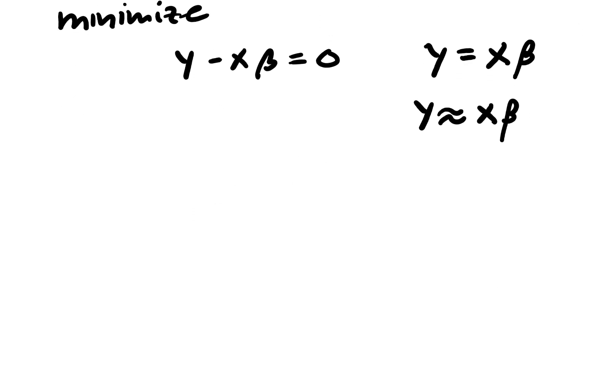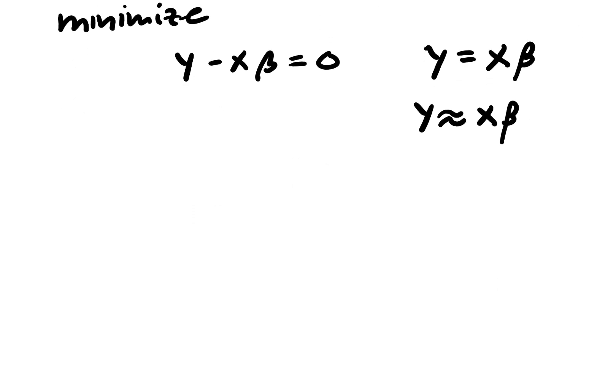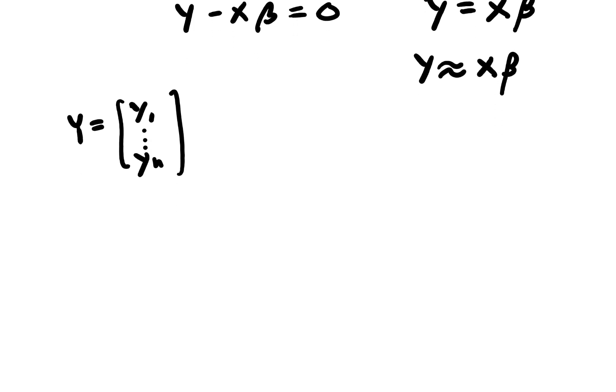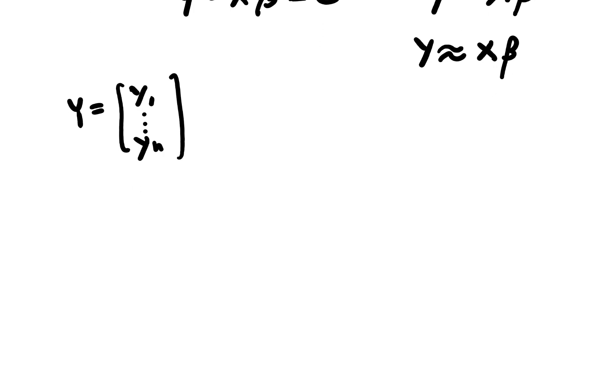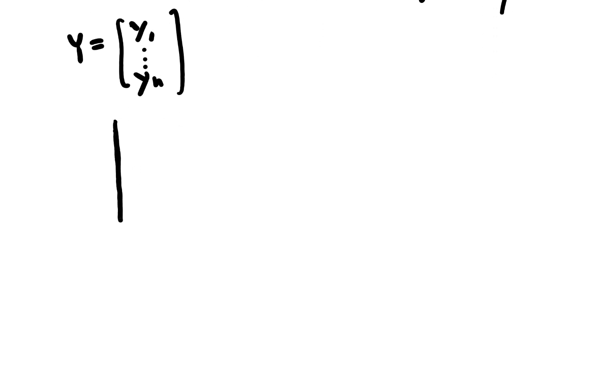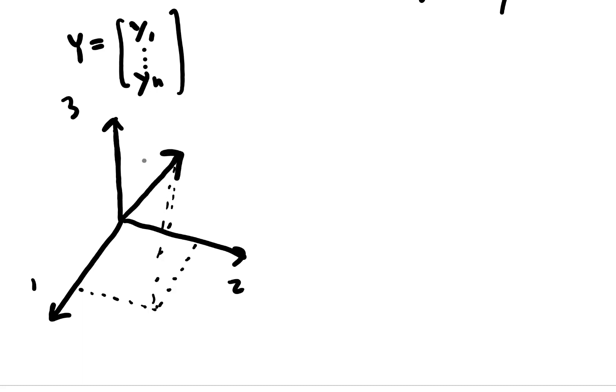All right, so this is our model. What I want to do to use geometric interpretation to solve this is first of all consider y. So y is a vector of observations. I'm going to say y1 dot dot dot to yn. I want to visualize this. So I'm going to consider that we only have three y's. If we have three y values or three observations, we can consider this in 3D space. So this would be 1, 2, and 3, and then we can draw our vector. So y would look something like this.